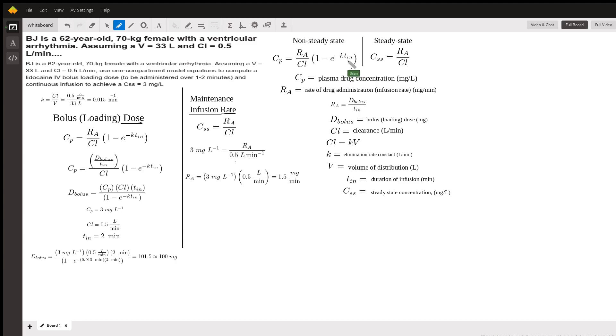And so as the infusion runs longer and longer, TIN, the infusion time, the value is going to increase. And that is going to make E to the negative KTIN going to approach zero.